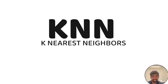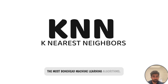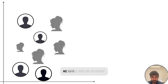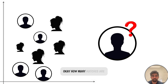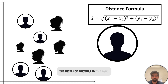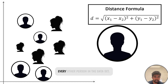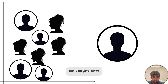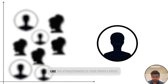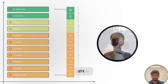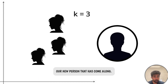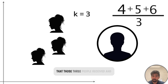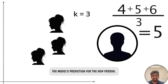First up, we have KNN or K-Nearest Neighbors. This is one of the most straightforward machine learning algorithms. Let's say we have a dataset of people who have used dating apps like Tinder or Hinge, and someone new comes along and you want to figure out how many matches they're going to get. You essentially calculate the distance between our new person and every other person in the dataset using the distance formula. The distance will be based on input attributes that affect how many matches you get, like the attractiveness of your profile photo on a scale of one to ten. Let's say K equals three — we'll look at the top three closest people and simply take the average of the matches those three people received. That's the model's prediction for the new person.